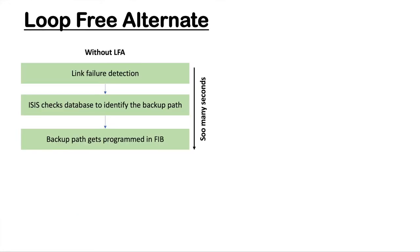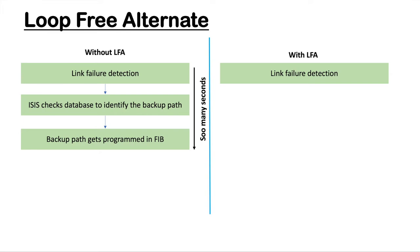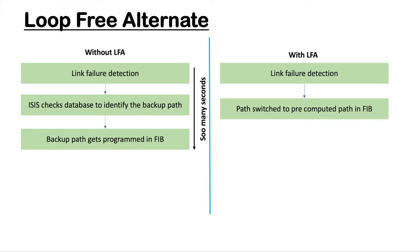On the left-hand side you can see that without LFA, you have to go through each process: link failure detection, then ISIS identifies a path, then it programs the data plane — taking many seconds. Now with LFA, link failure detection is still required regardless, so always use BFD in your network. But once you have LFA configured, as soon as the router detects the link failure it will switch to a pre-computed path — the LFA path — which doesn't need to be programmed at failure time because it's already present.